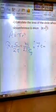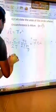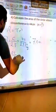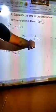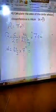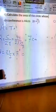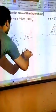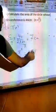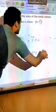Now I have radius = 7 cm, so it is easy to find the area. Area = π R² = (22/7) × 7² = (22/7) × 49. When you calculate that, it will be 154 cm².